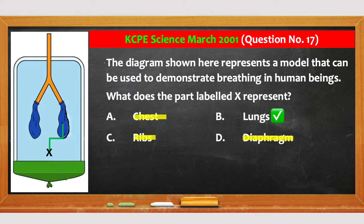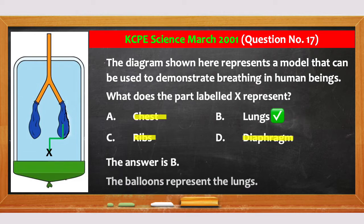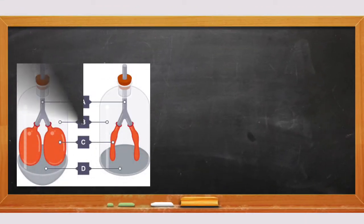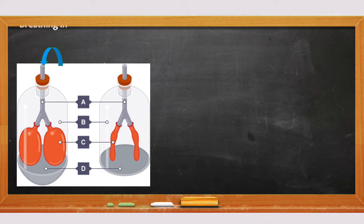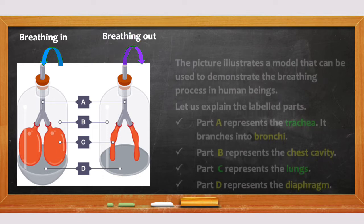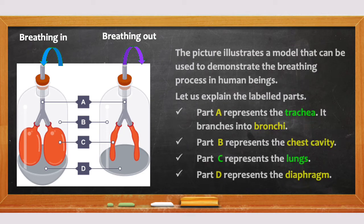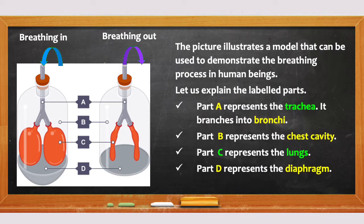The answer is B. The balloons represent the lungs. The picture illustrates a model that can be used to demonstrate the breathing process in human beings. Part A represents the trachea, which branches into two bronchi. Part B represents the chest cavity. Part C represents the lungs. Part D represents the diaphragm.